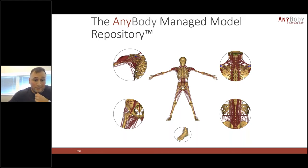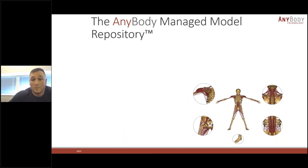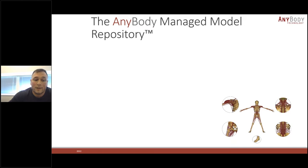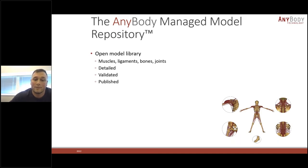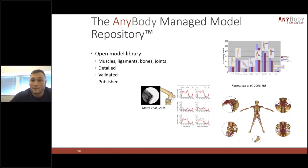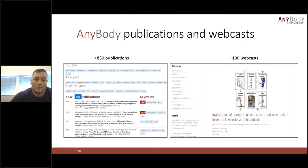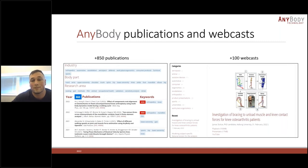The software comes with the AnyBody Managed Model Repository, which is an open library of models containing several body models that combine to a full human body model. There are also detailed application examples inside the library, validated and published by several researchers — for instance, comparing calculated forces within AnyBody with actual measured forces in different motions and postures. We maintain a full publication list on our website with more than 800 publications and more than 100 webcasts.